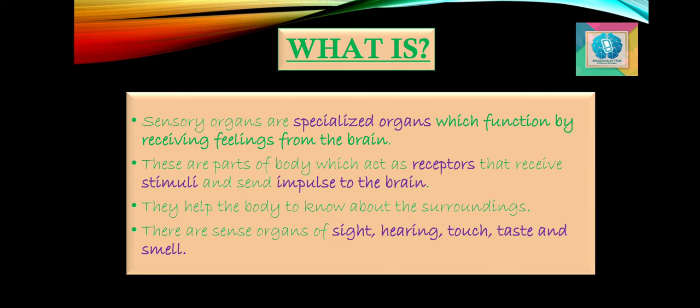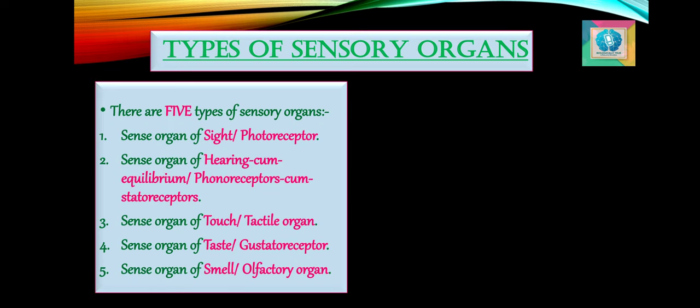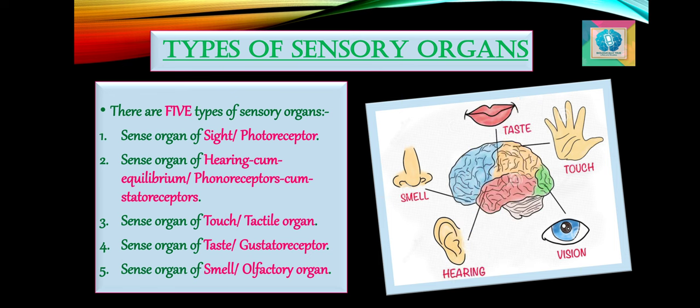In man and other higher animals there are five types of special senses to respond to the environment. The types of sensory organs are: sight, hearing, touch, taste and smell.